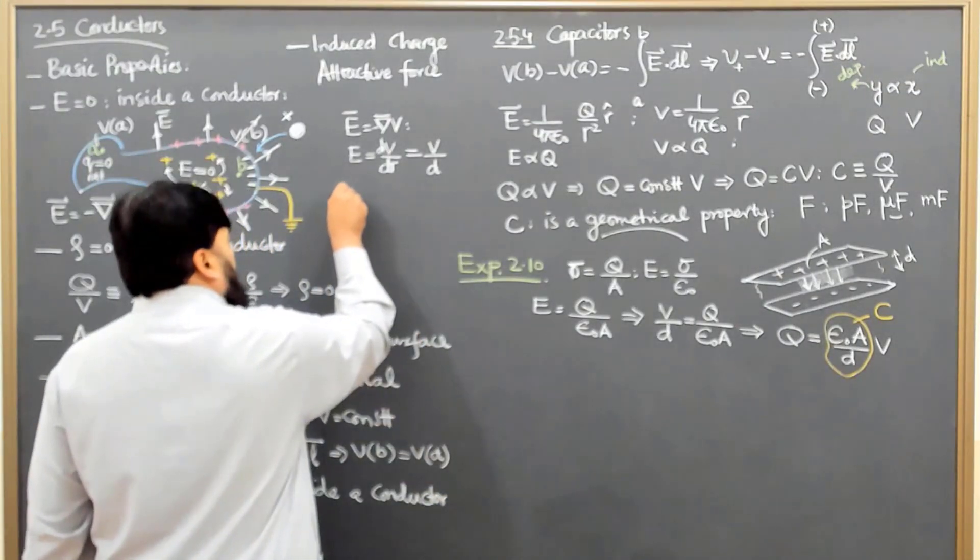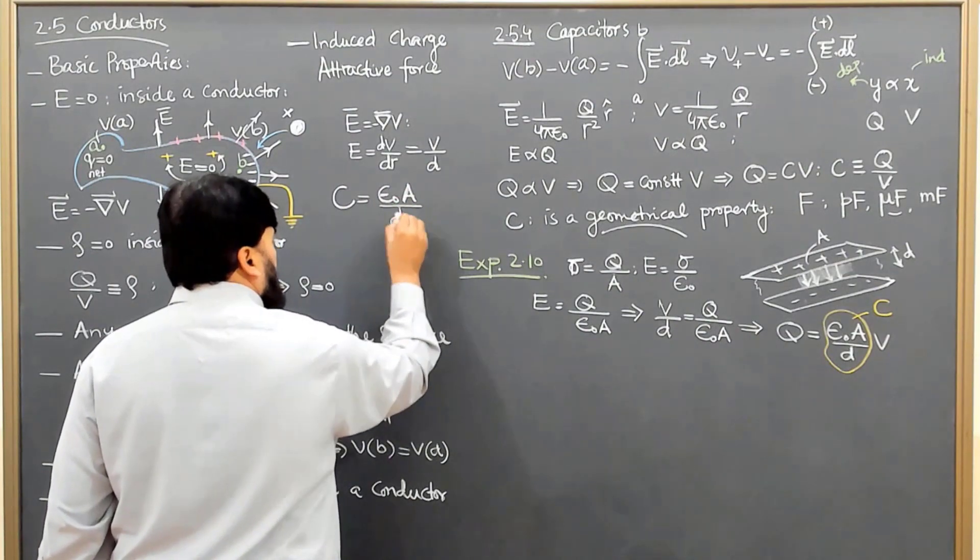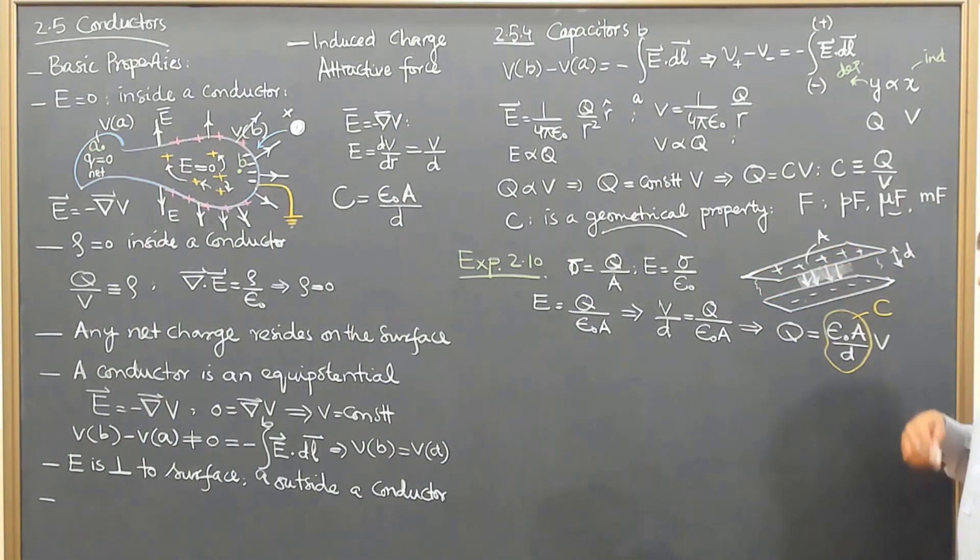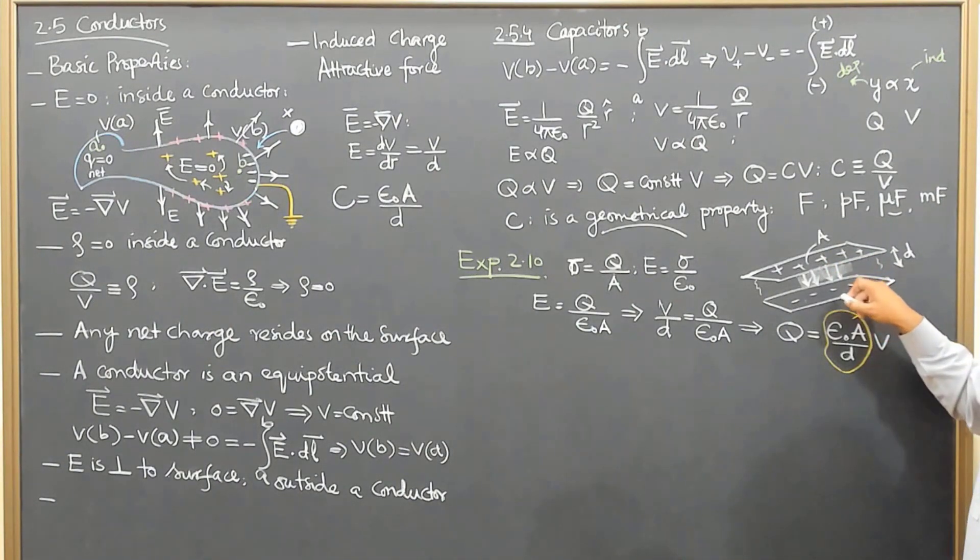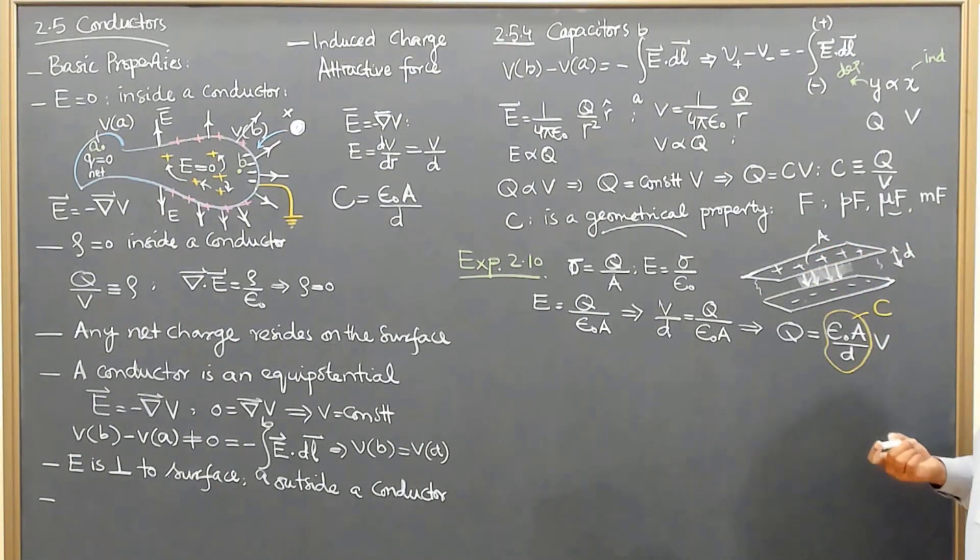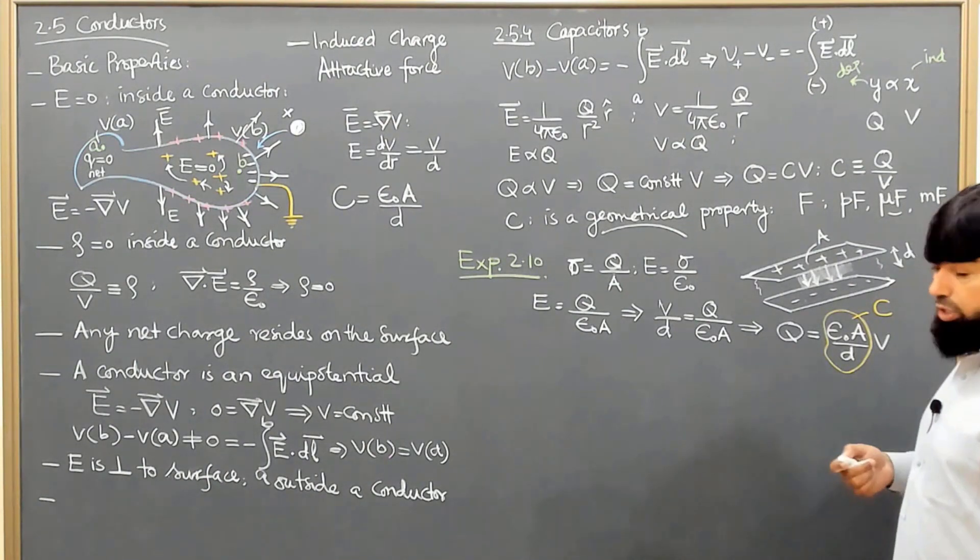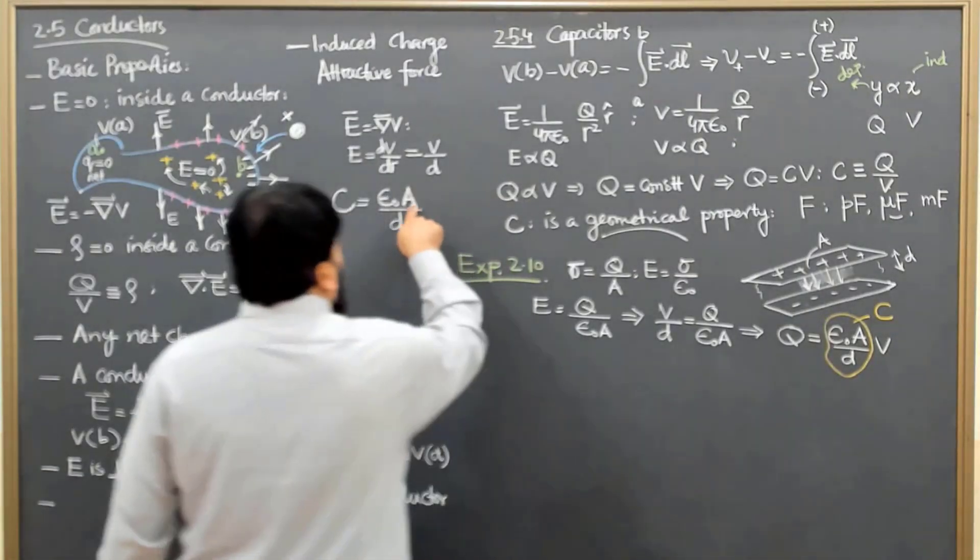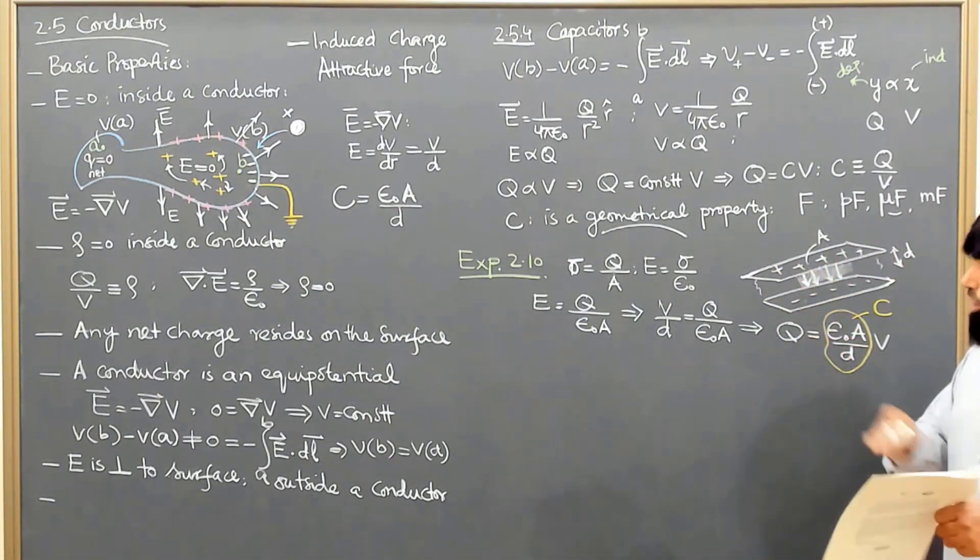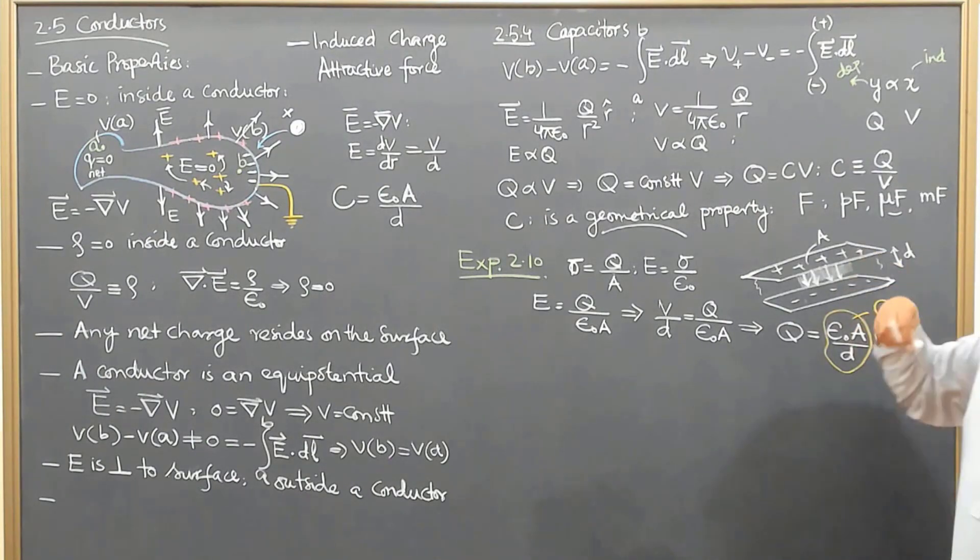C equals epsilon naught A over D. What is epsilon naught? It's the medium between the two plates - this is geometry we are discussing. If we change the material between the plates from free space to any other material, the capacitance will change. A is the area of the plates - if we change the area, capacitance will change. Otherwise it remains the same. It is again a geometrical property.